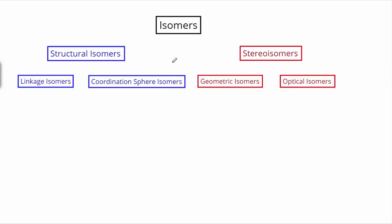Structural isomers are going to have a totally different bond connectivity — the atoms that are bonded together are going to be different. So all the same atoms total in the compound, but the atoms actually bonded together will differ. Stereoisomers, on the other hand, will have all of the same bond connectivity, but the three-dimensional arrangement of the atoms is what's going to be different.